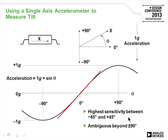With a single-axis accelerometer for tilt, the output follows a sine wave function: at zero degrees there is essentially no acceleration, and at 90 degrees there is -1G. Accuracy near the peaks is limited, and there is no way to distinguish between the two halves of the rotation, so full 360-degree capability is not achievable with a single axis.